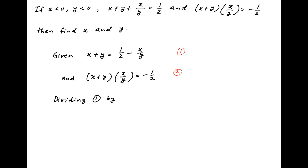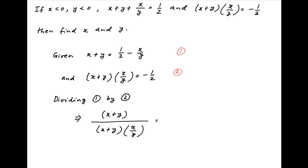Now dividing equation 1 by equation 2, we get on the left hand side x plus y divided by x plus y times x upon y, and this is equal to on the right hand side half minus x upon y divided by minus half. The right hand side is equal to minus 1 plus 2x upon y, and on the left hand side x plus y cancels across the numerator and the denominator.